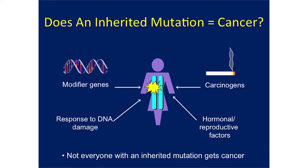A common question is: does an inherited mutation equal a certainty of cancer? The answer is no. When people inherit these mutations that cause a higher risk, what they inherit is a different probability than other people that a cancer will develop. We don't always know what the modifying influences are — other genes may play a role, response to DNA damage, carcinogens like cigarette smoke, and for a number of these gene mutations I'll talk about today, hormonal and reproductive factors. But the key point is that what's inherited is risk and not a certainty of cancer.